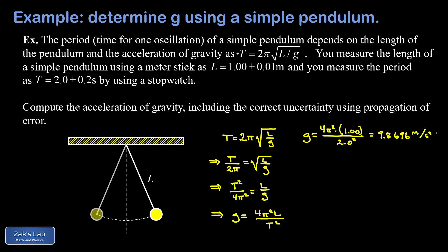Now we can get into the error propagation problem. I notice in our formula for g that it's proportional to L and it's proportional to 1 over t squared. So I'm going to write this like g is proportional to L t to the negative 2.